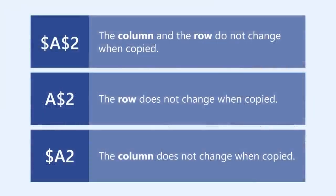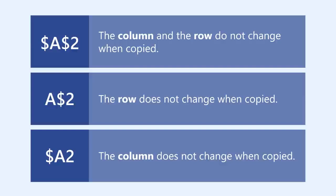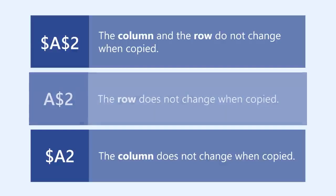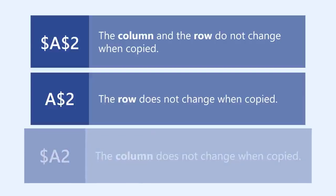Absolute references have a dollar sign placed before the column, row, or both to keep them from changing when you copy the formula to another cell. To keep both the column and the row from changing, place a dollar sign in front of both. To keep only the row from changing, place a dollar sign in front of the row only. To keep only the column from changing, place a dollar sign in front of the column.